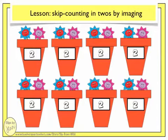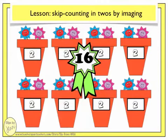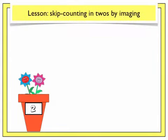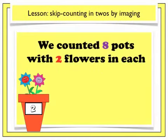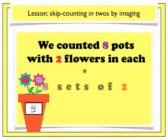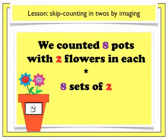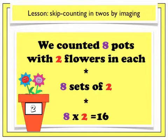Did you have an image in your mind of the flowers in the pots before they grew out? Was your total 16 as well? We counted 8 pots with 2 flowers in each. Another way to say that is 8 sets of 2, or to write it as 8 times 2.